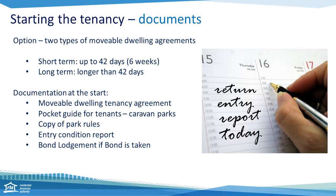With long-term agreements, you need to give a written agreement to the tenant — it's called the Form 18B — and that will include both standard terms and special terms. You must also give the tenant a pocket guide for tenants in caravan parks and an entry condition report. You may give them an entry condition report for movable dwellings, and if a bond is taken, you'll have to go through the bond lodgement process and can fill out a hard copy form or lodge it online through the RTA.